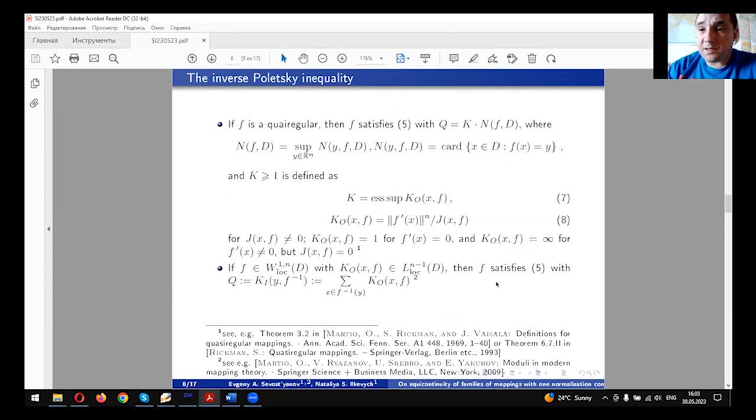There are many mappings satisfying the inequality mentioned above. For example, every quasi-regular mapping satisfies the inequality (5) for the corresponding values of Q through the multiplicity function N and the constant K, which takes part in this notation, may be defined in correspondence with (7) and (8).